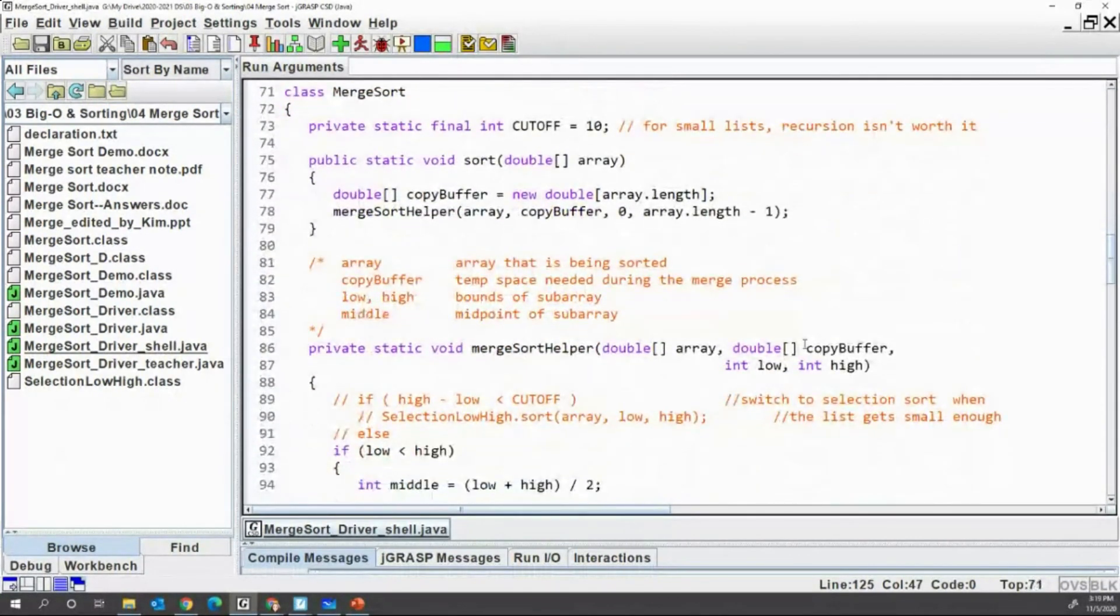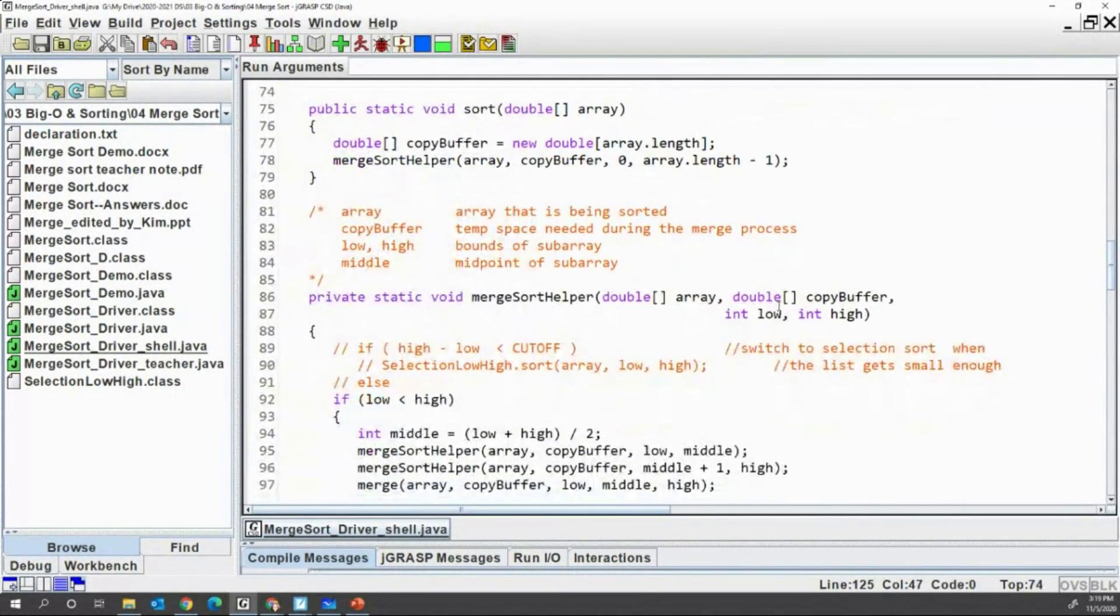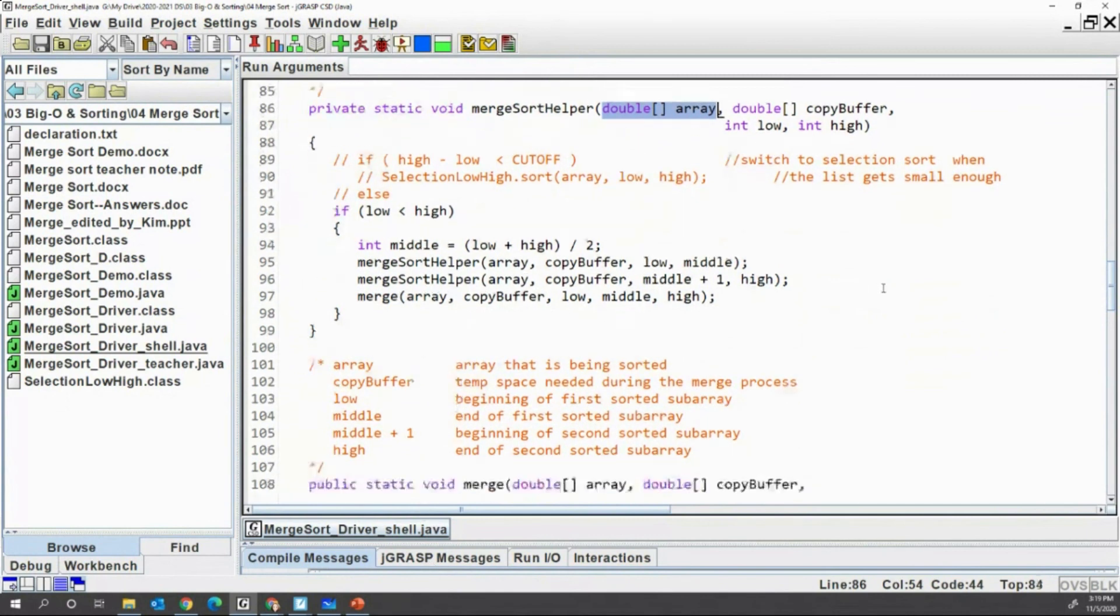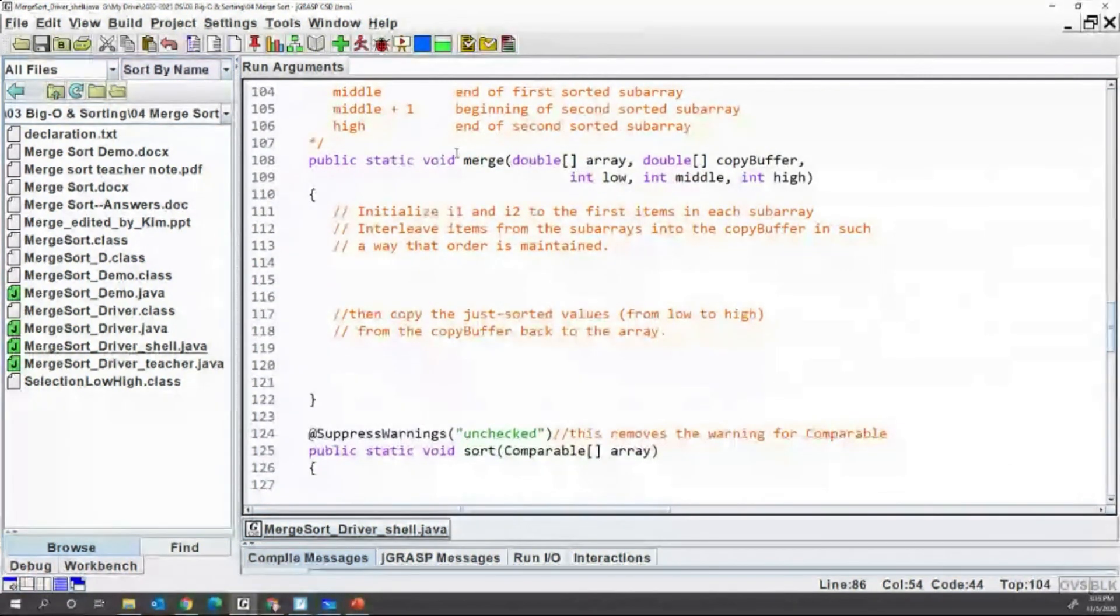Now merge sort class. Sort method is written. You can refer this sort method to finish another sort method for the comparable type array. And merge sort helper. This is written for the double type array. You are going to refer this to write the comparable type array later.